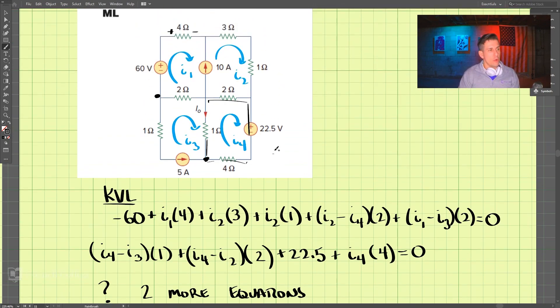Two more equations. Well, we have 10 amps here, so that is I2 minus I1 equals 10. So I2 minus I1 is this 10 here. So there's one equation. And then we also have that I3 equals negative 5.